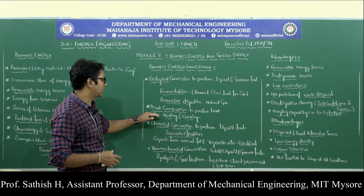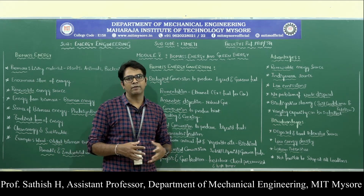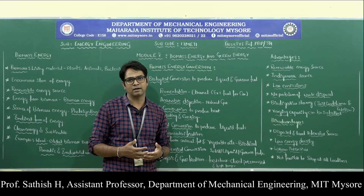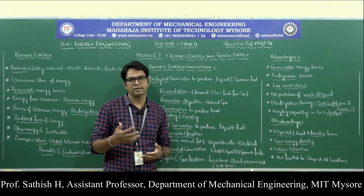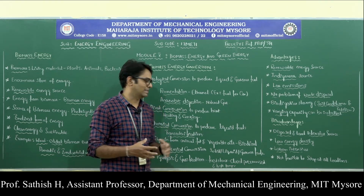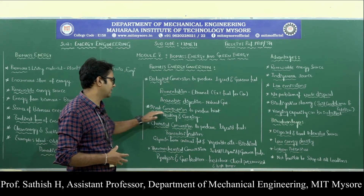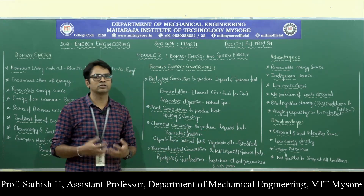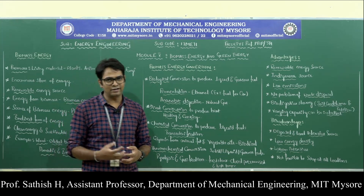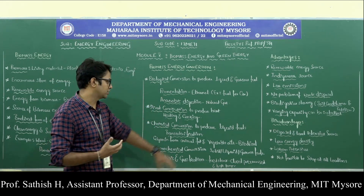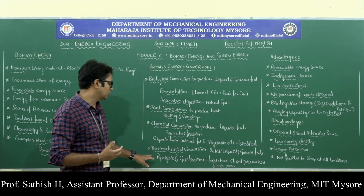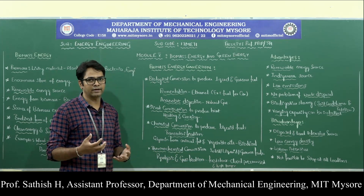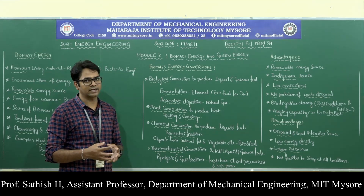Direct combustion to produce heat: you have biomass energy, you burn it, and the heat released can be used. There is also chemical conversion to produce liquid fuel, where chemical processes help convert biomass fuel into liquid fuel. The last method is thermochemical conversion, where we make use of heat, temperature, and chemicals.